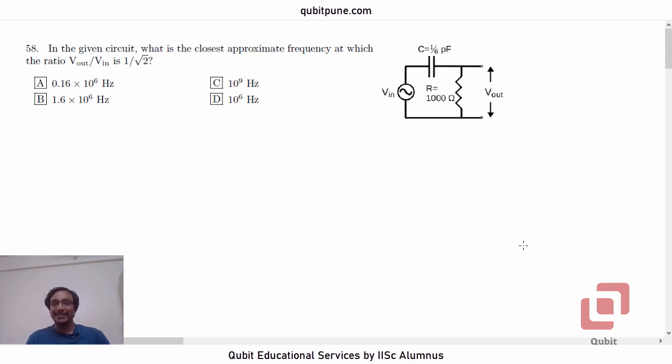Namaste. Welcome back to our channel, Qubit Educational Services. In this video series, we are solving the physics MCQs from IISC Aptitude test 2017. And in this video, we are going to solve the third last MCQ, MCQ number 58 from the paper and MCQ number 13th from physics.